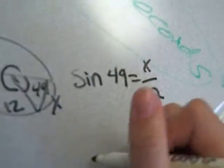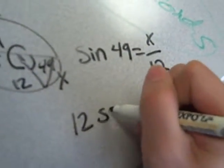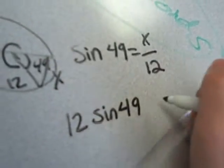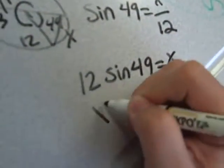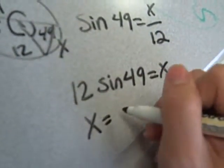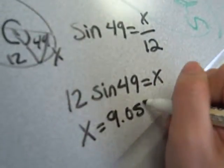Multiply 12 by both sides. And put it into a calculator and you get X equals 9.056 feet.